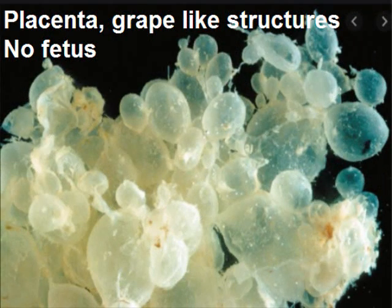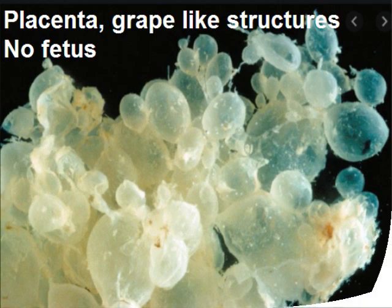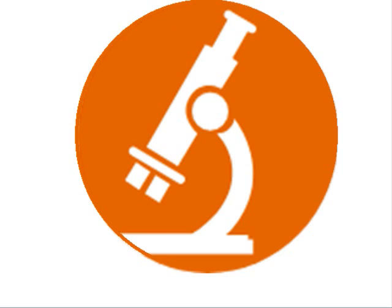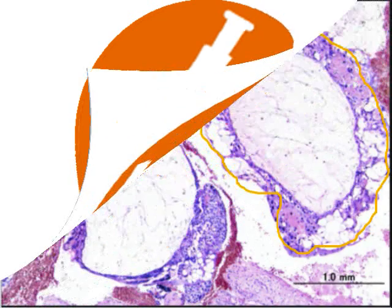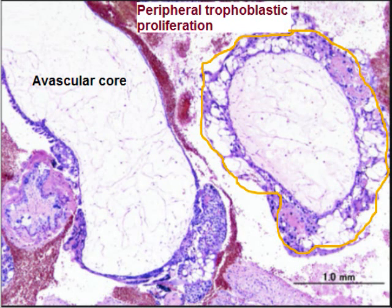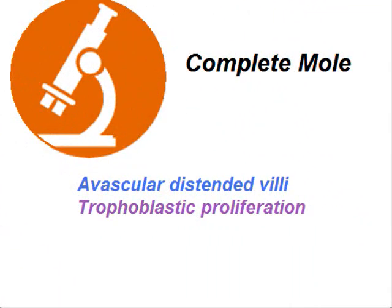Grossly, the placenta shows grape-like structures and there is no fetal part along with the placental tissue. Under the microscope, there are distended chorionic villi with no blood vessels — an avascular core — and there is peripheral trophoblastic proliferation. The yellowish outline shows proliferation of trophoblastic tissue. To summarize: avascular distended villi and trophoblastic proliferation.